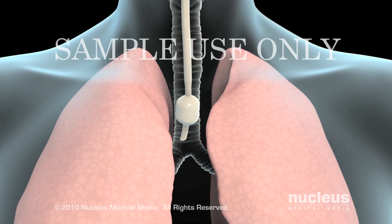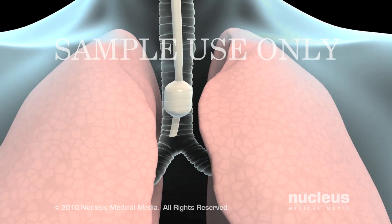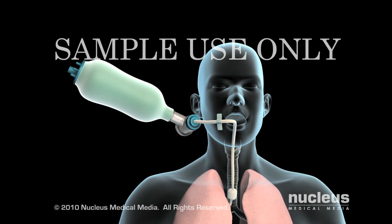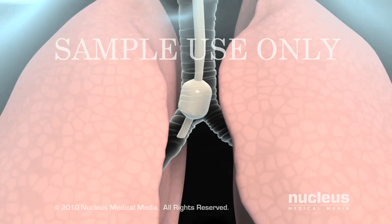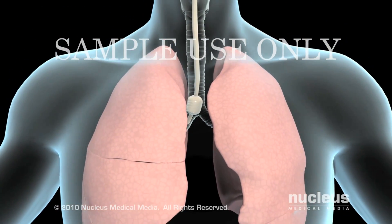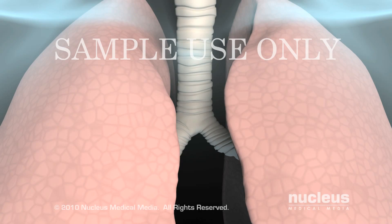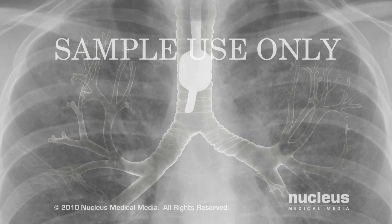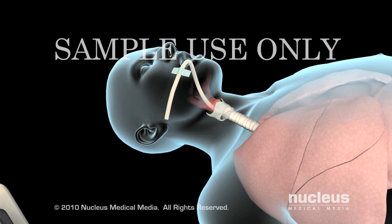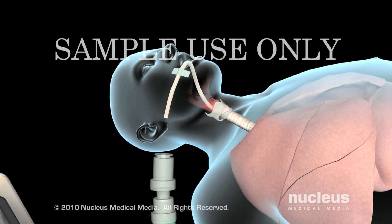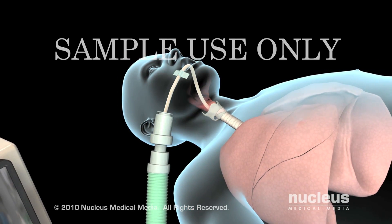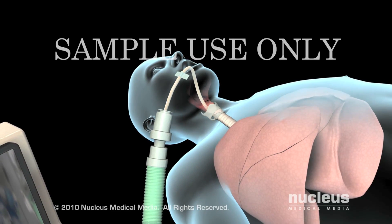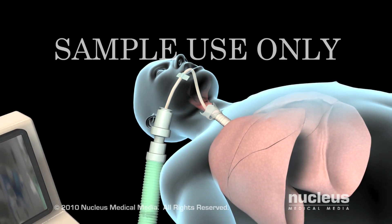Your doctor will check to see that the tube is properly positioned in the lower part of the trachea by inflating your lungs with a special bag and listening for breath sounds on both sides of your chest. If the end of the tube is too low, both lungs will not receive the same amount of air. In some cases, an x-ray is taken immediately after intubation to confirm the tube's placement. Once the endotracheal tube is in the proper position, your doctor will attach it to the mechanical ventilator, a specially designed pump that aids respiration by delivering well-oxygenated air into the lungs and permitting carbon dioxide to escape from the lungs.